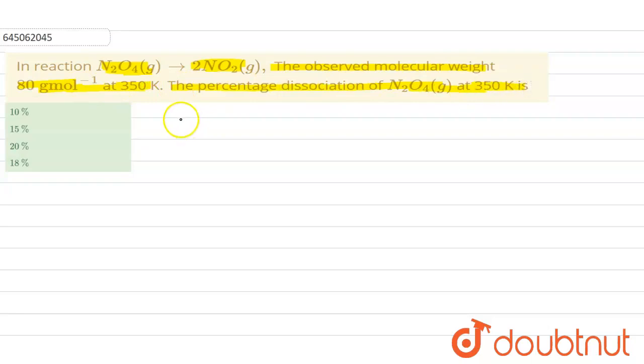The given reaction is N₂O₄ gas goes to twice of NO₂ gas. Now, the molecular mass calculated would be of NO₂: nitrogen is 14 plus oxygen 32, so it would be 46. For 2 it will be 92 grams.